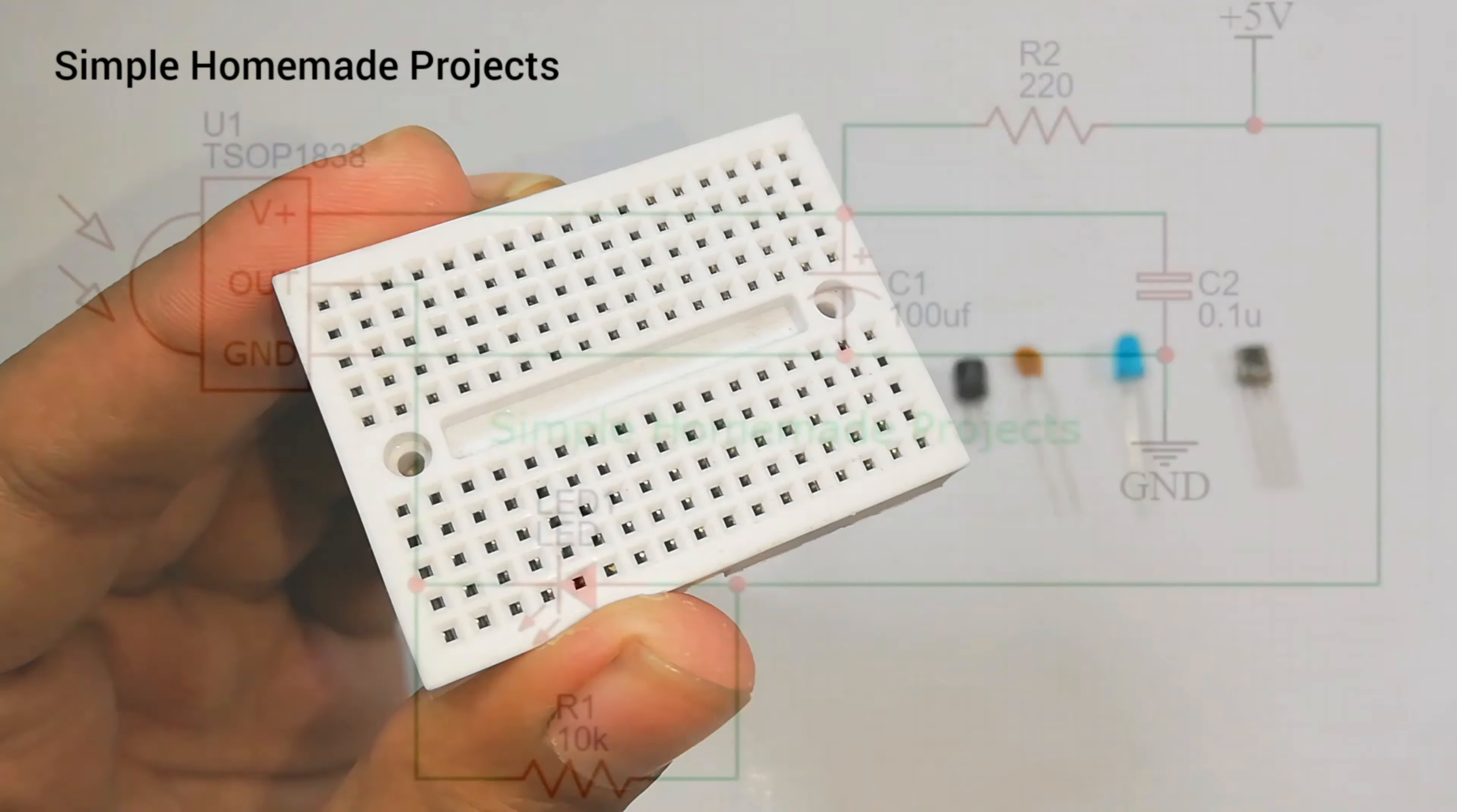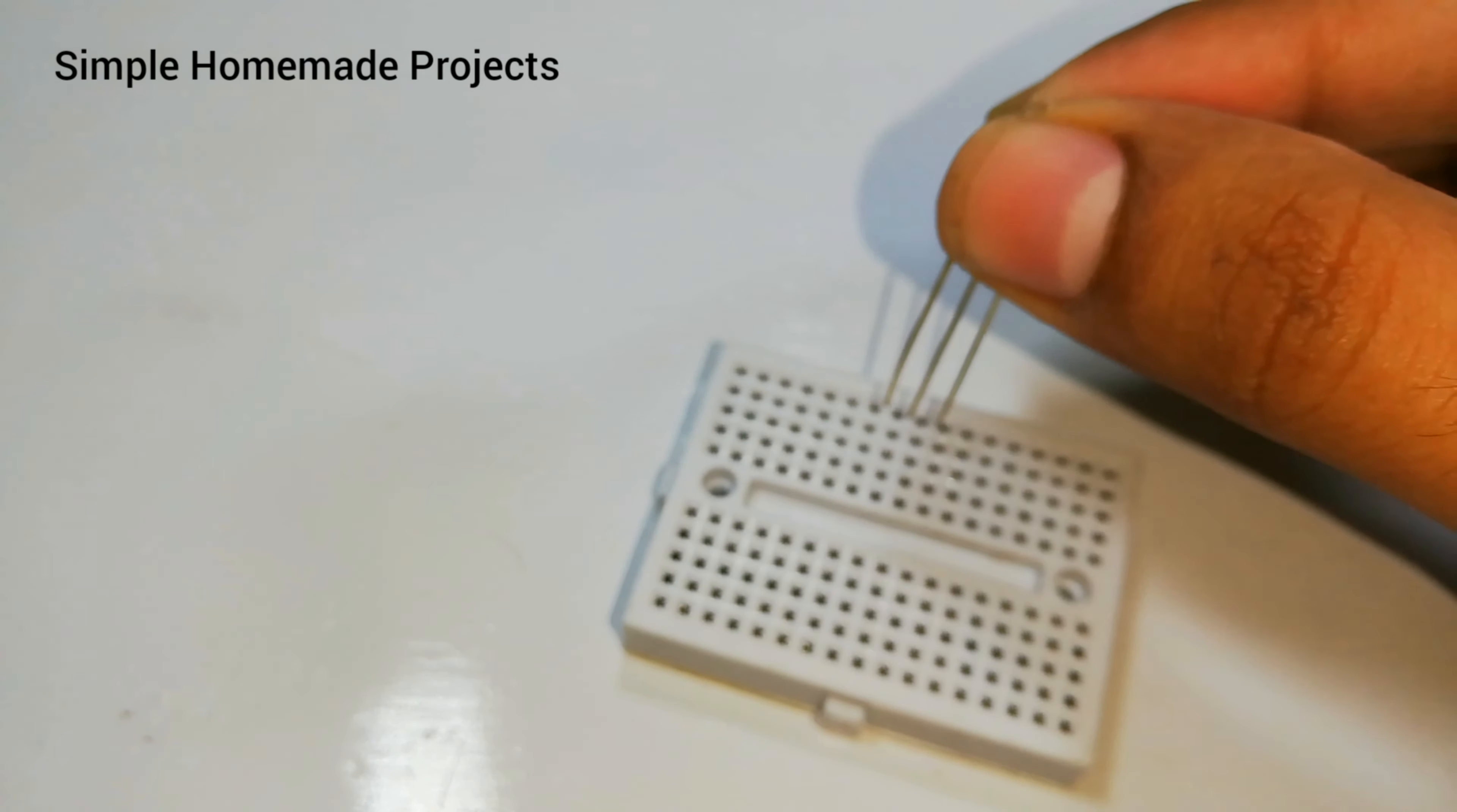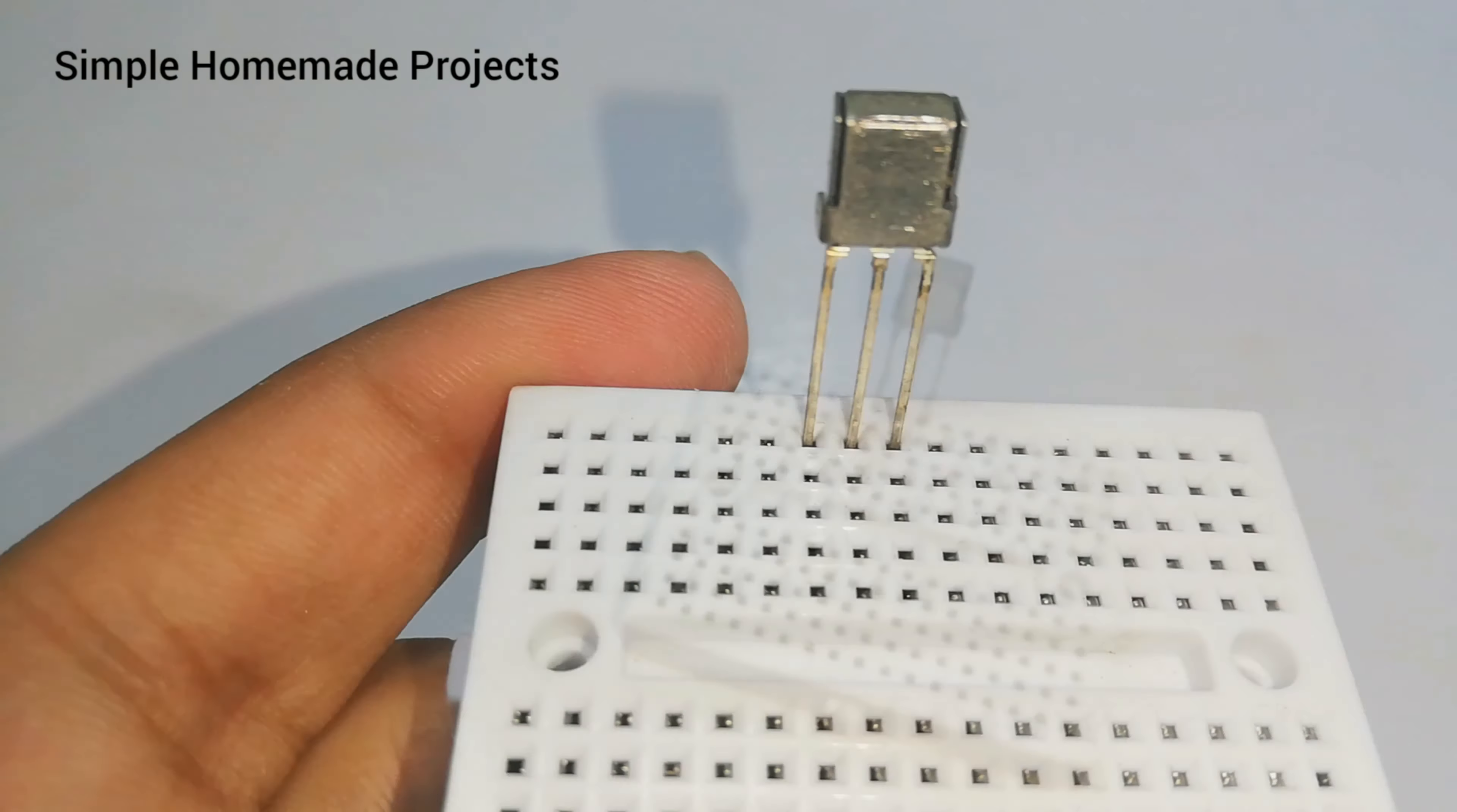Now I am going to make the connections according to the circuit diagram. You can download it from the link in the description. First of all, place the receiver in the breadboard as shown such that its flat side faces towards you.